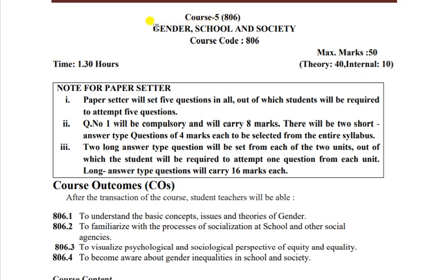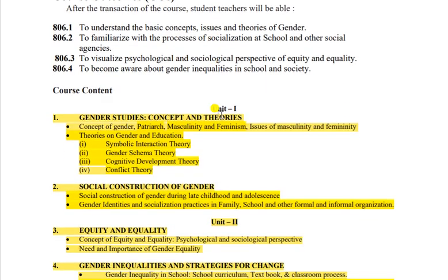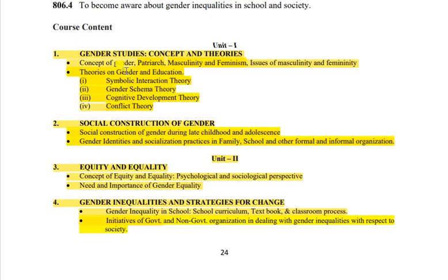Next subject hai Gender, School and Society. Course code aap yahan se dekh sakte hain - again two units ka yeh subject hai. Gender studies ke baare mein - concept and theories hain. Theories pe se ek question definitely aayega. Yahan gender - patriarch society, masculinity, feminism, issues of masculinity and femininity - first bullet mein se ek question, second bullet mein se ek question. Theory pe bhi 4 marks ya 16 marks mein - hamesha theories pe question aa hi jaata hai har saal.